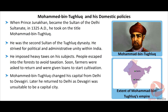Mohammed bin Tughlaq changed his capital from Delhi to Devagiri to protect his capital from the invasions by the Mongols. All government officers and the citizens were also asked to move. Later, they were asked to return to Delhi as Devagiri was unsuitable to be a capital city. These changes caused great misery to the people.